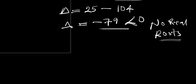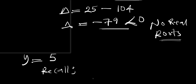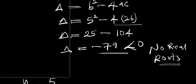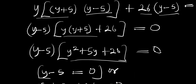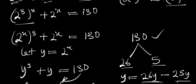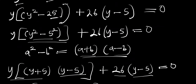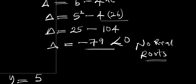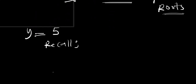So recall that we had y equals 2^x. We are going to make use of that. So y = 5 means 2^x = 5. From here we are going to solve for x.